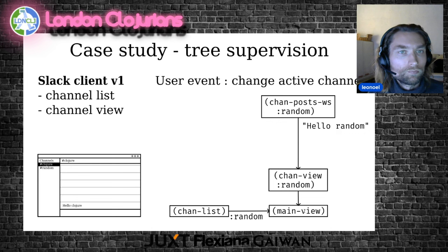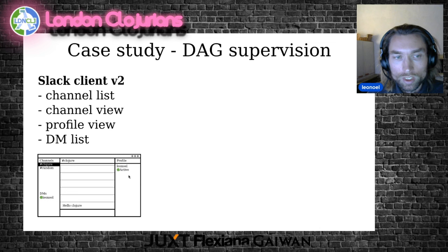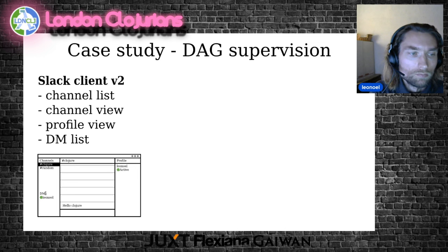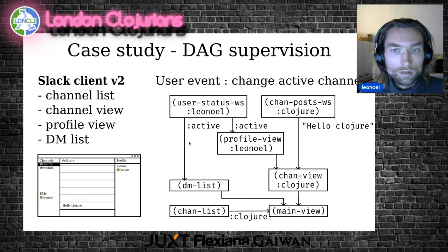But now we are going to see a more complex example that illustrates the problem of sharing — Slack Client V2. We keep our channel list and our channel view and add a profile view and a DM list. The profile view lets you click on any user in the channel to see information about them, especially their active status. This information is also available in the DM view, which shows the latest interaction with specific users and also shows the active status. So there is going to be a shared resource to retrieve the active status.